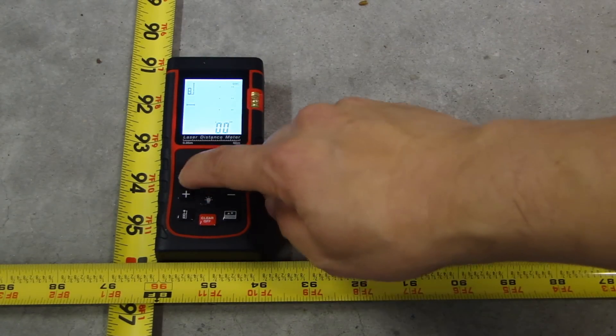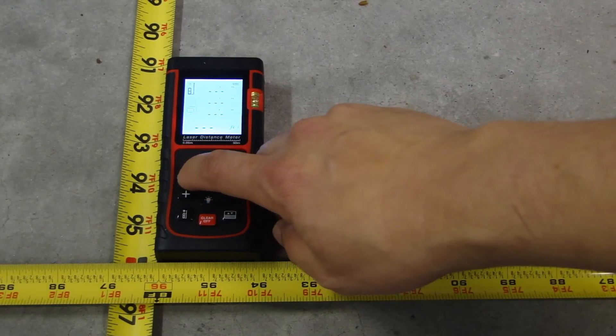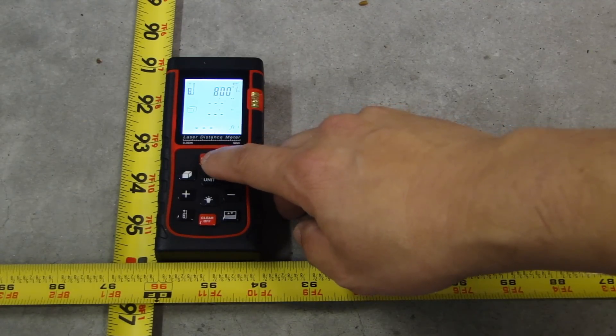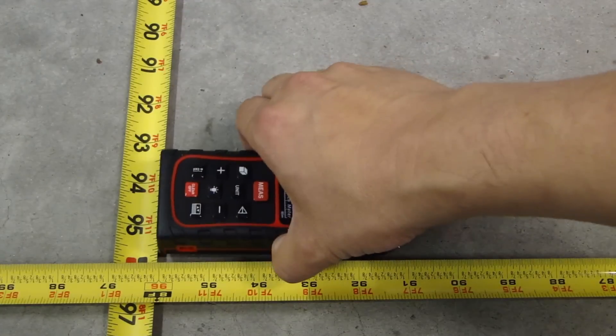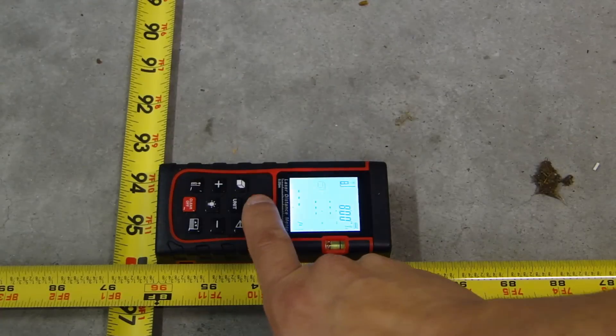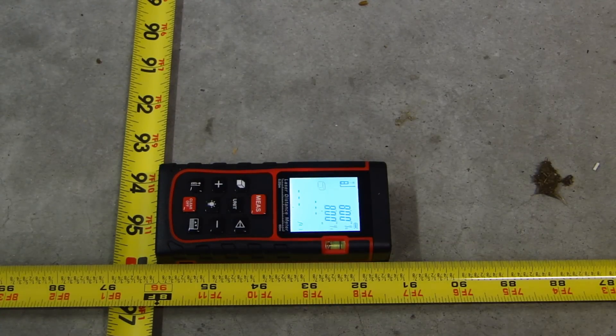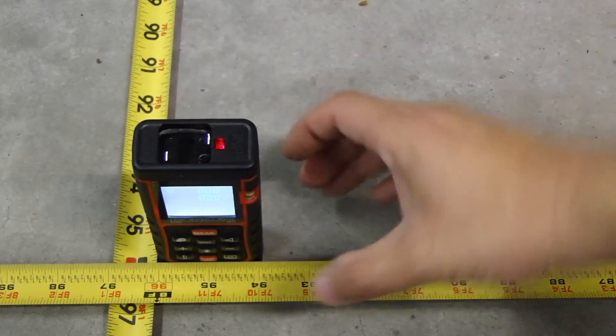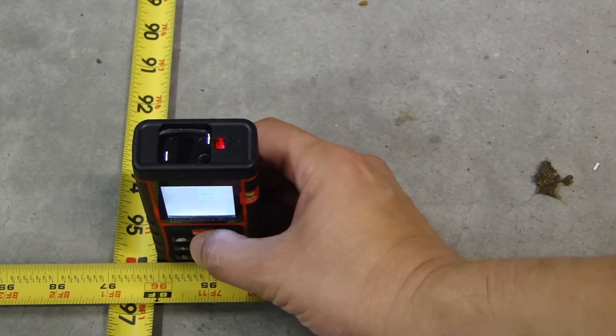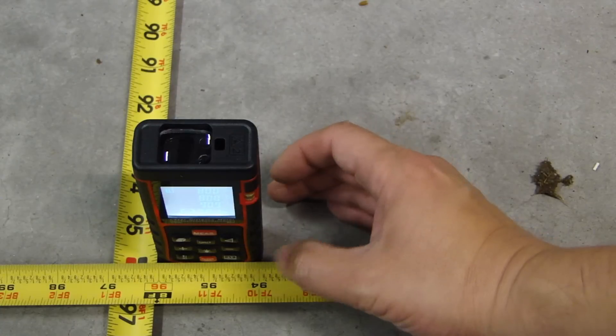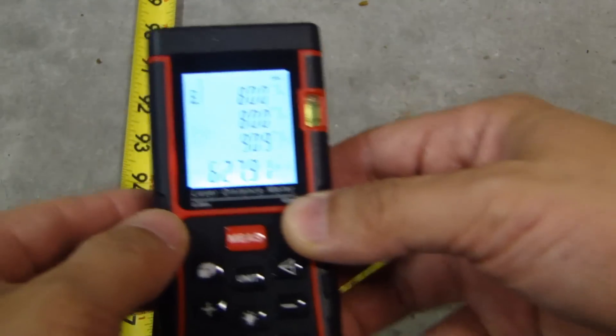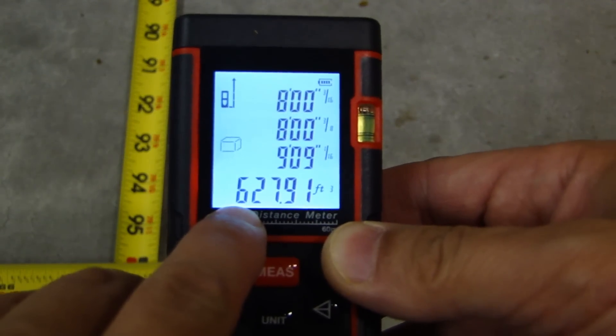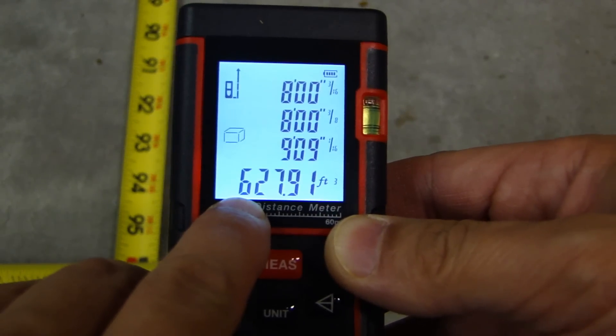I'm going to press this button here to change to measuring the total volume. And now I'm going to take one measurement. Turn this around, take the second measurement. Now I'm going to bring this up pointing to the ceiling, take the third measurement. Now you can see the total cubic feet calculated is six hundred and twenty seven point nine one cubic feet.